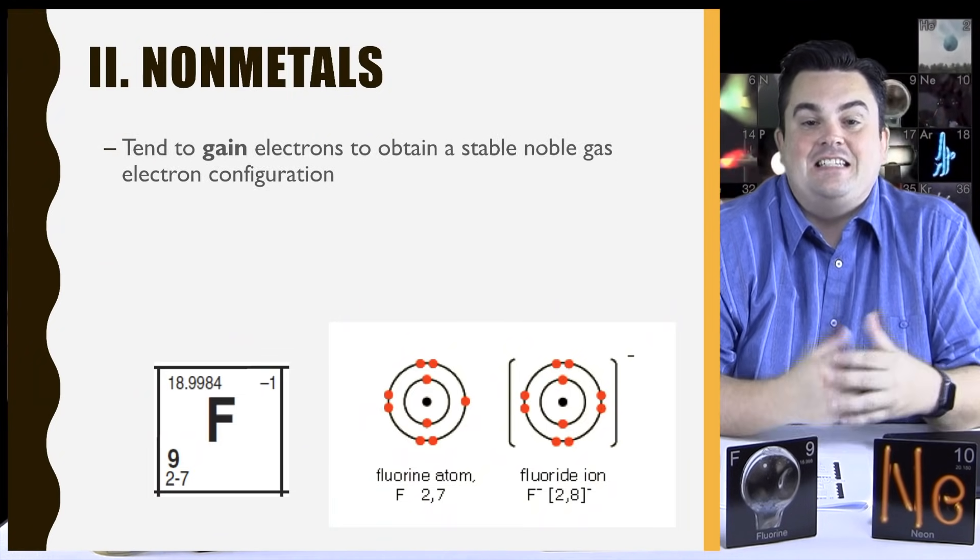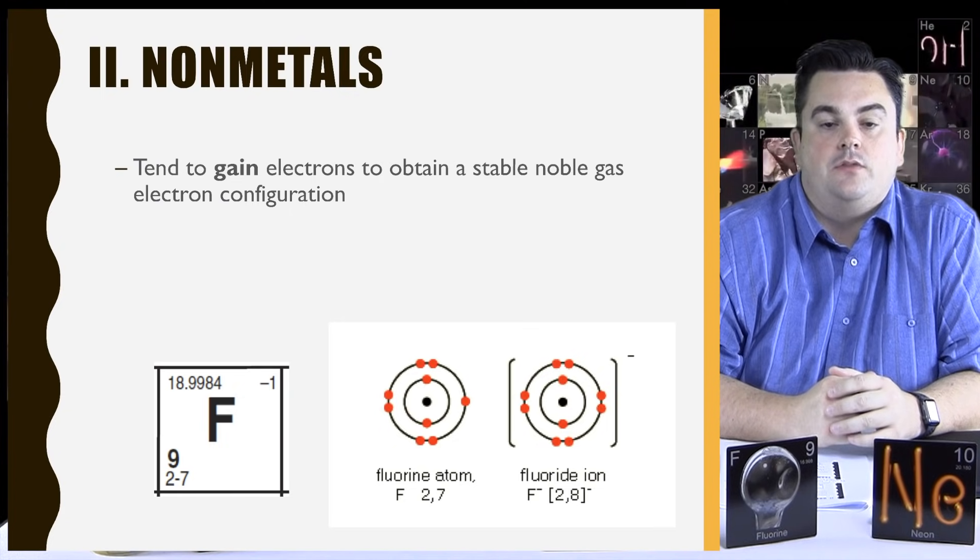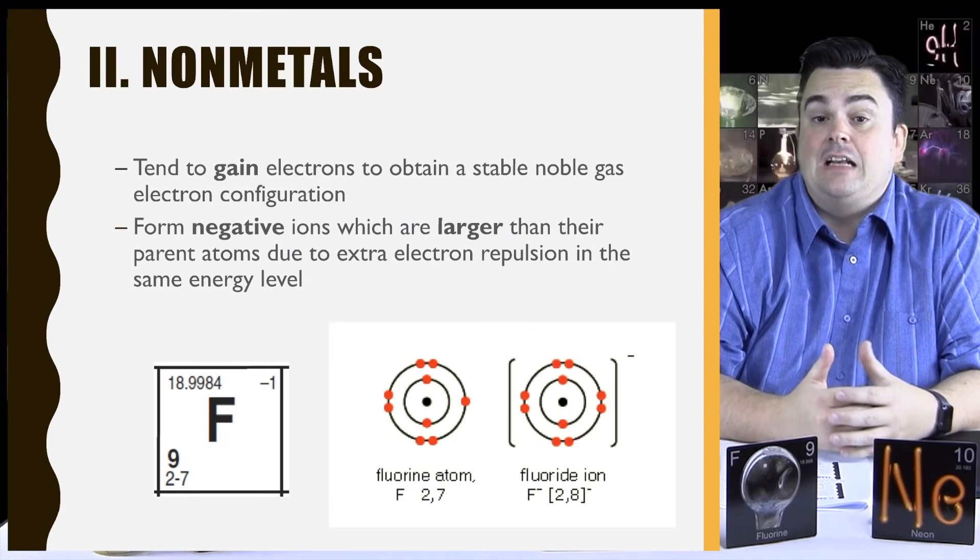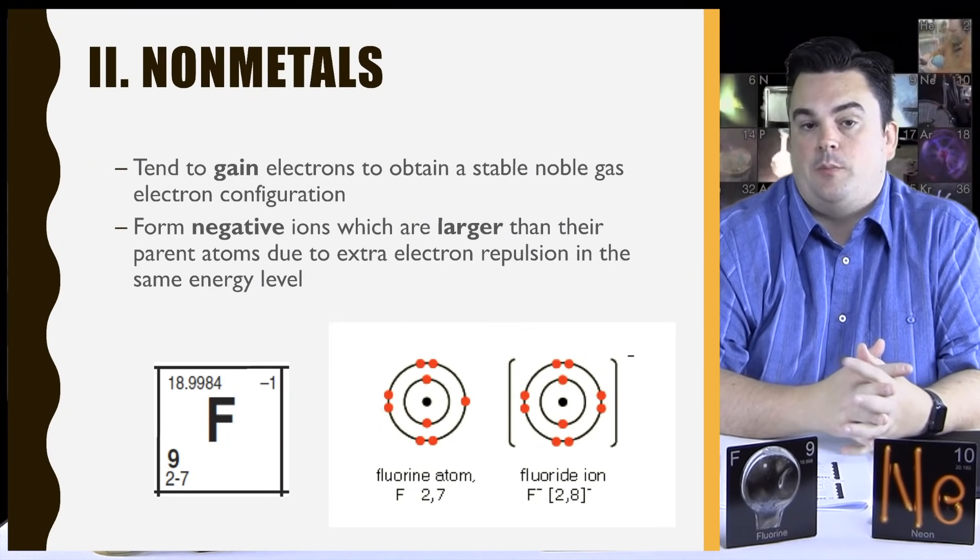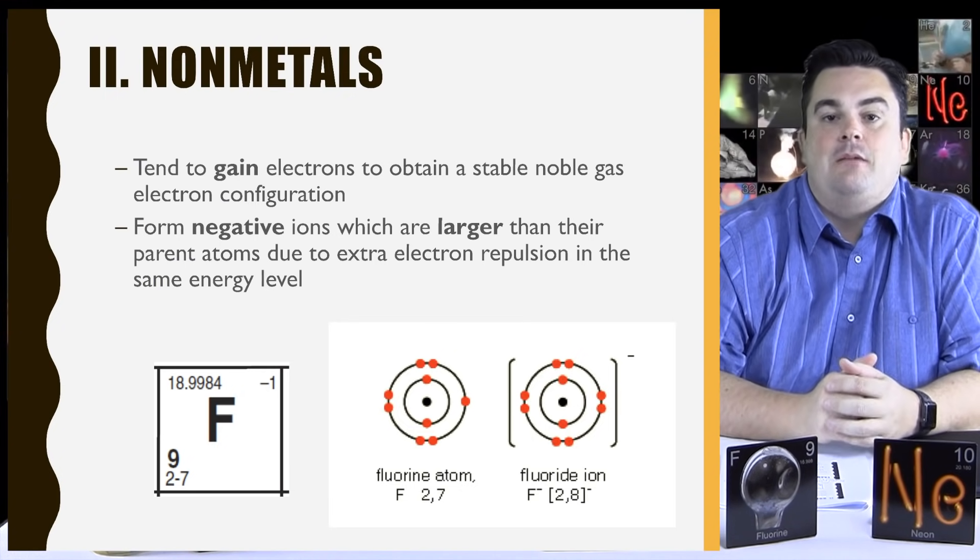Non-metals. They tend to gain electrons to obtain a stable noble gas electron configuration. They form negative ions, which are larger than their parent atoms due to the extra electron repulsion in the same energy level.